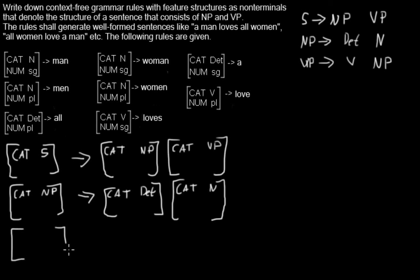And then for the third rule we know that this one will be the VP. And it will consist of something of category verb and something of category NP.